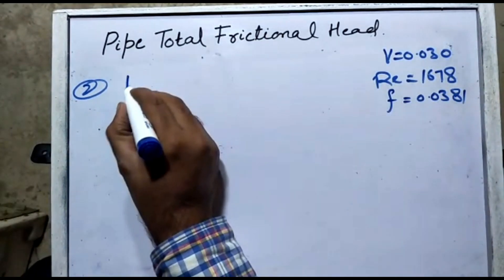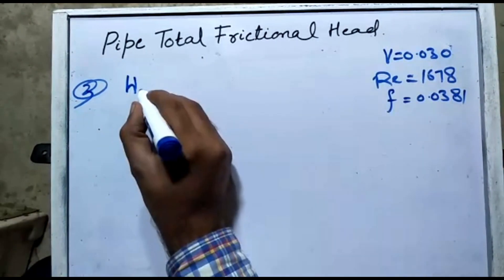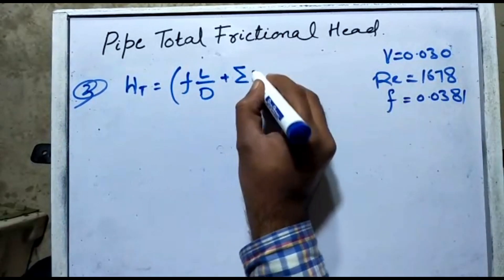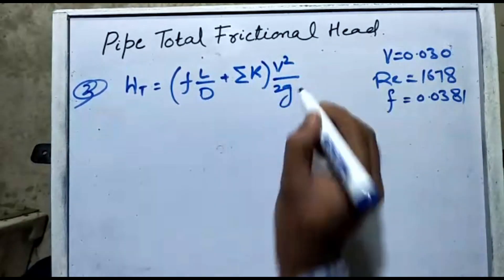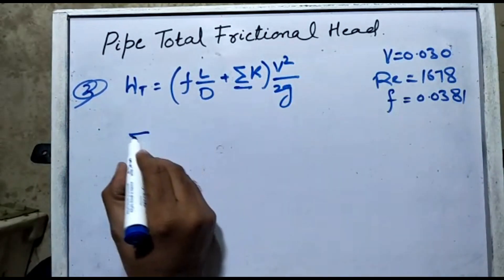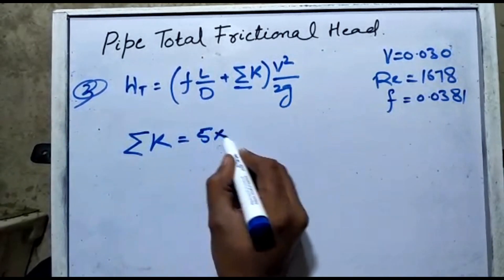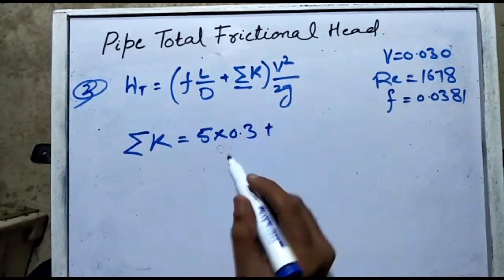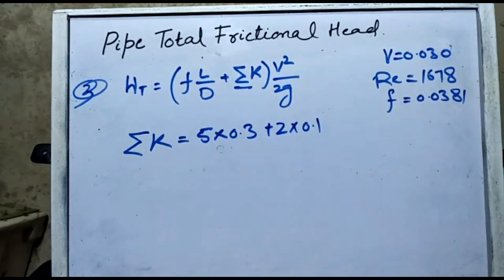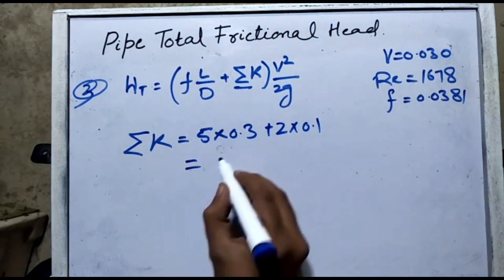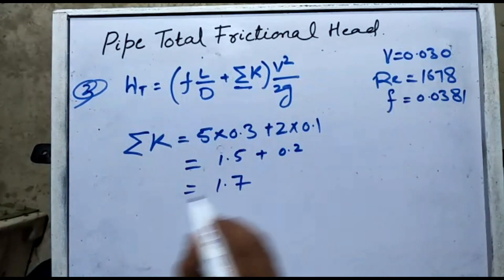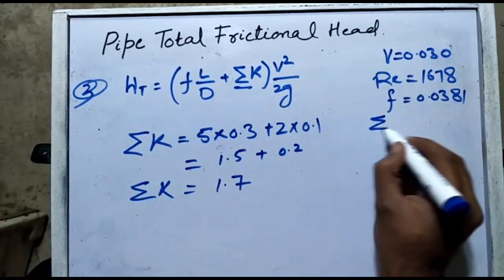Now applying the Darcy-Weisbach equation to find the total head loss: h_f = (f·L/d + ΣK) × v²/2g. First we find the sum of K-values: 5 elbows × 0.3 = 1.5, plus 2 gate valves × 0.1 = 0.2, giving ΣK = 1.7.